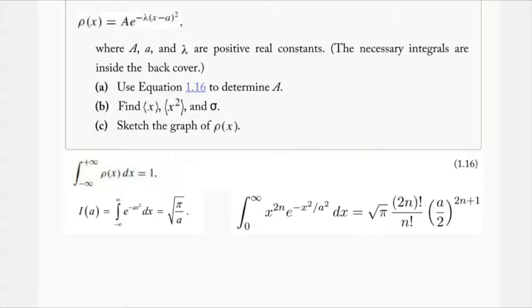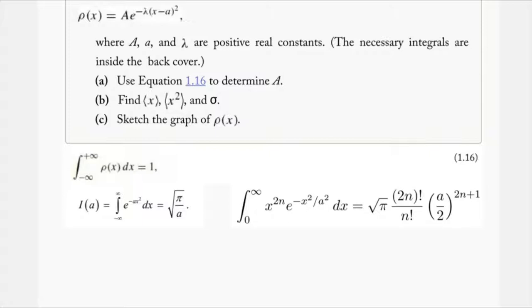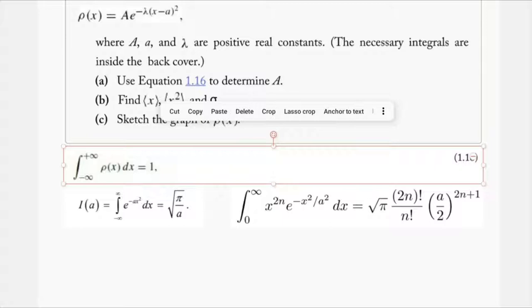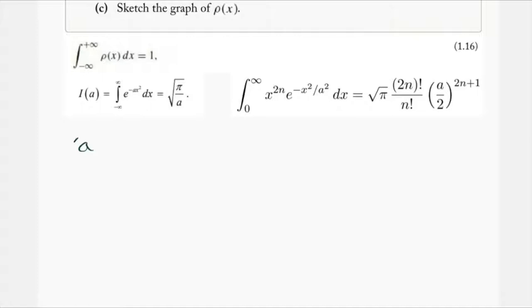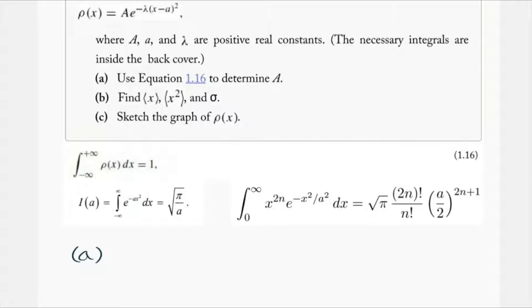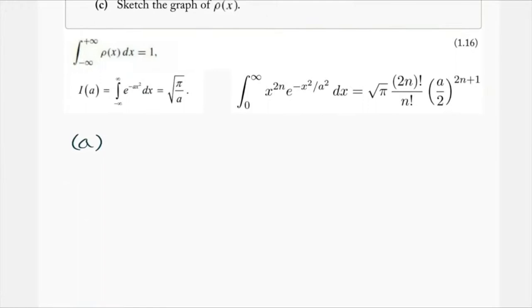So part a asks us to use equation 1.16 to determine the constant a. Equation 1.16 is the normalization integral from negative infinity to infinity of ρ(x) dx equal to 1 — that's called the normalization condition used to determine a, the normalization constant. We're going to solve for a.